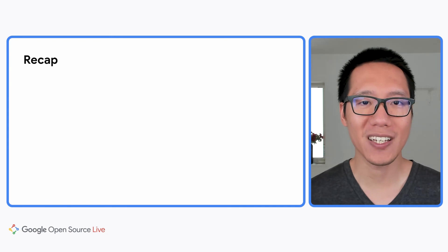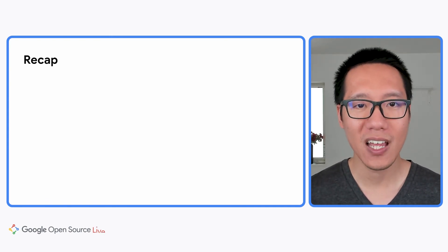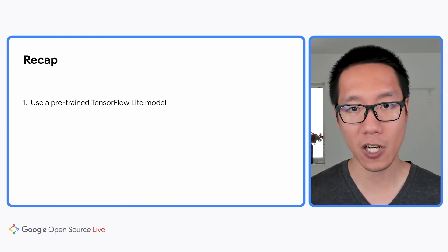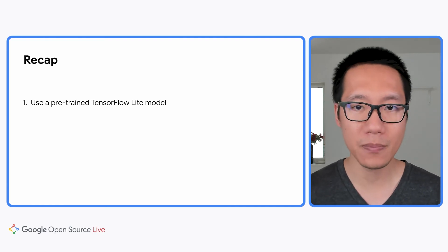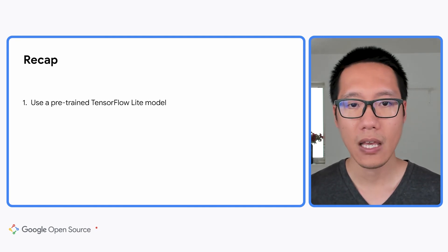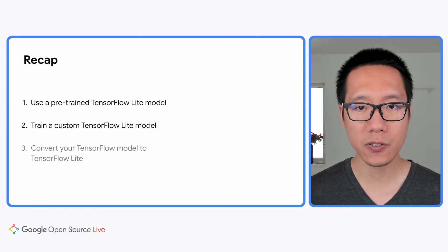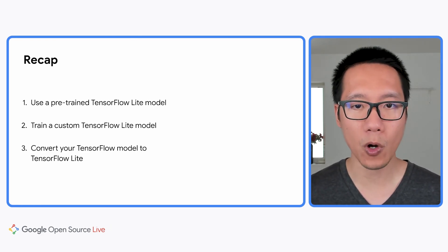So that was all the content for today. Let's recap: first, get started with on-device machine learning by downloading pre-trained TensorFlow Lite models from TensorFlow Hub and integrating them in just a few lines of code using the TensorFlow Lite Task Library. Then I showed you how to quickly train a custom TensorFlow Lite model using Model Maker. And finally, we talked about using TensorFlow Lite Converter to convert your TensorFlow model to TensorFlow Lite, and how to use TensorFlow Lite runtime to deploy it on edge devices. Thank you for watching, and please subscribe to the TensorFlow YouTube channel.